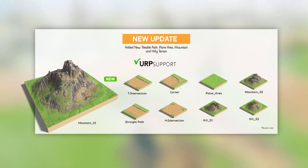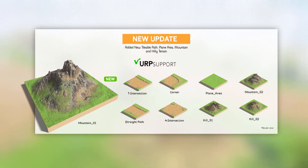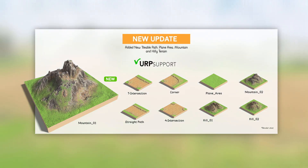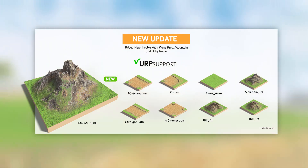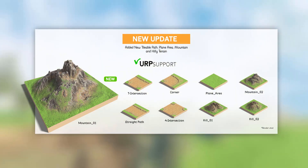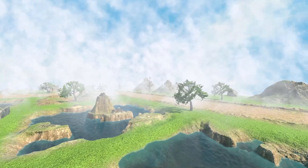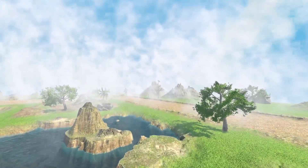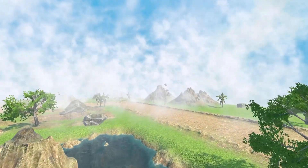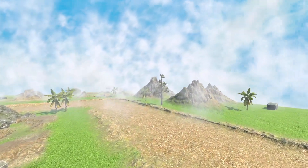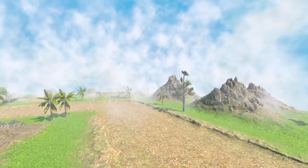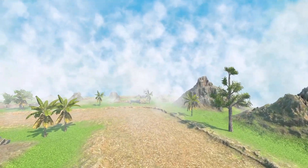We have released another major update to this pack and have added new assets including customizable 3D tile paths, mountains, hills, and a plain area where you can add your own assets. This asset is now compatible with the Universal Render Pipeline, or URP.